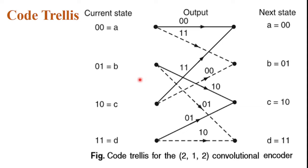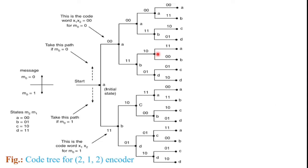The nodes on the left side denote the four possible current states, and nodes on the right side represent the next states. In this diagram, the solid line represents the input message bit M0 is equal to 0, and the dashed or broken line represents the input message bit M0 is equal to 1.